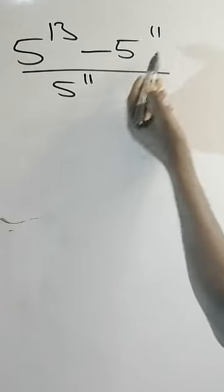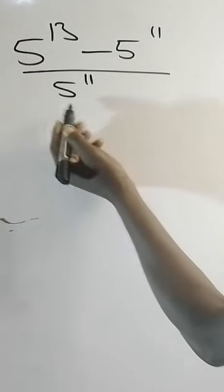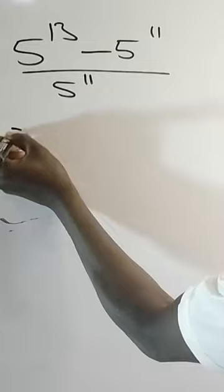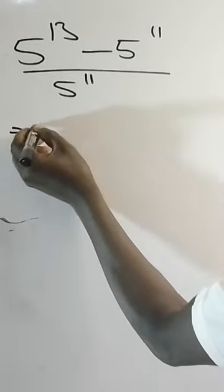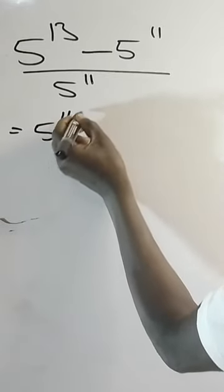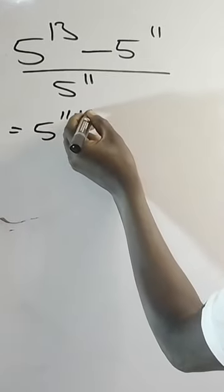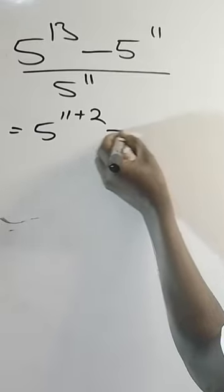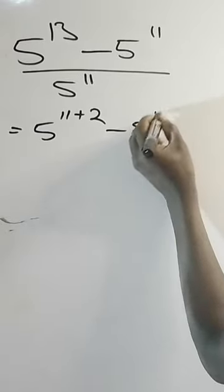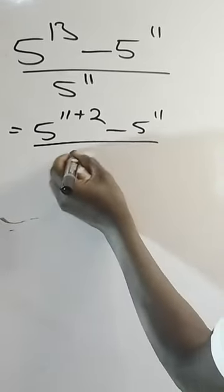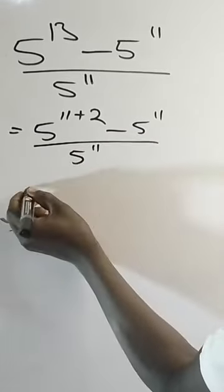5 raised power of 13 minus 5 raised power of 11, divided by 5 raised power of 11. This is the same thing as 5 raised power of 11 plus 2, then minus 5 raised power of 11, everything divided by 5 raised power of 11.